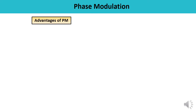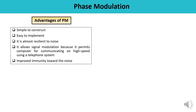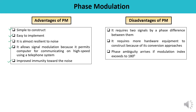The advantages of phase modulation are that it is simple to construct, easy to implement, and almost resilient to noise. Immunity to noise is improved and it allows signal modulation, permitting high-speed computer communication using telephone systems. The disadvantages are that it requires two signals with a phase difference, requires more hardware due to conversion approaches, and phase ambiguity arises if the modulation index exceeds 180 degrees.